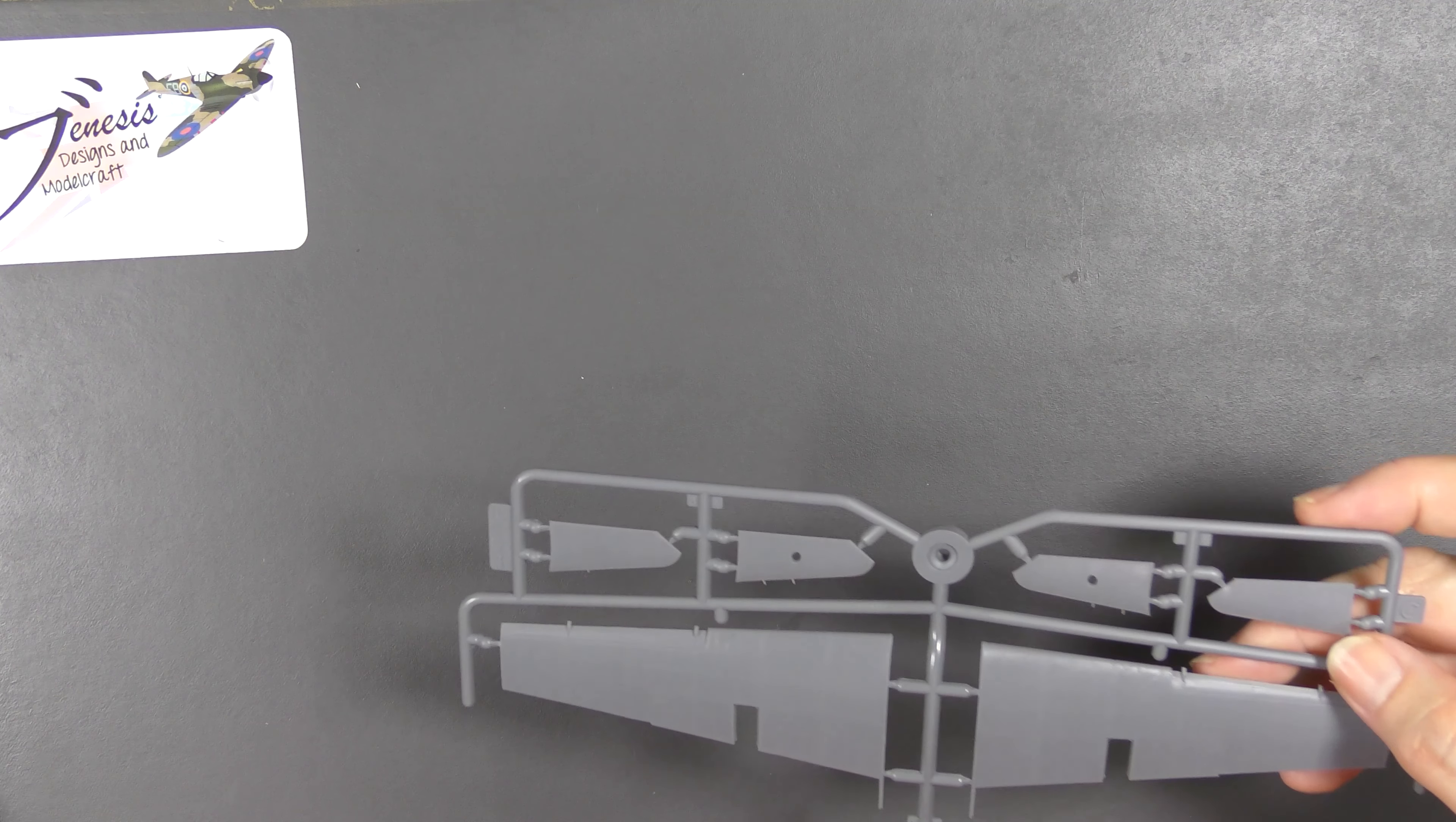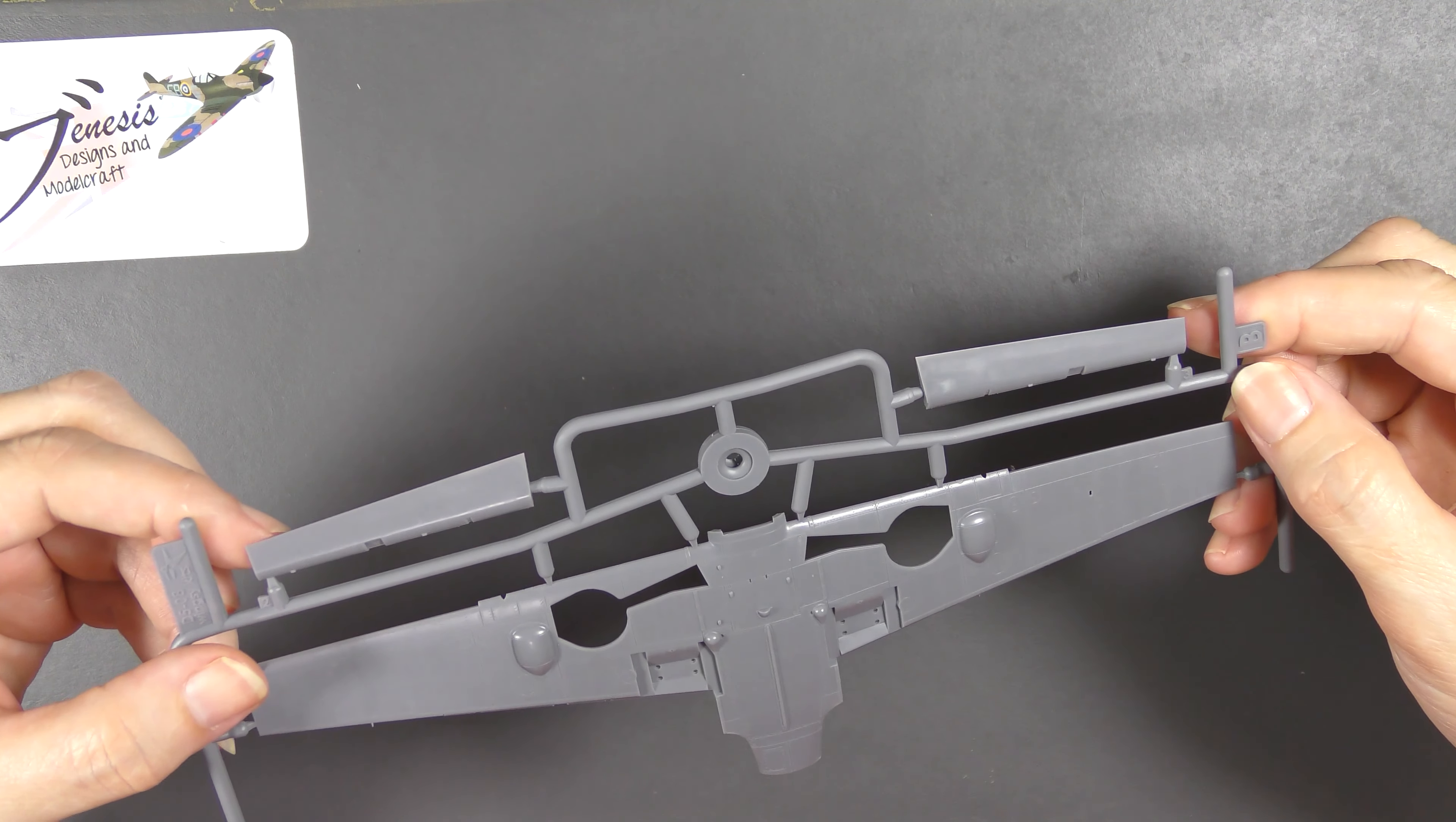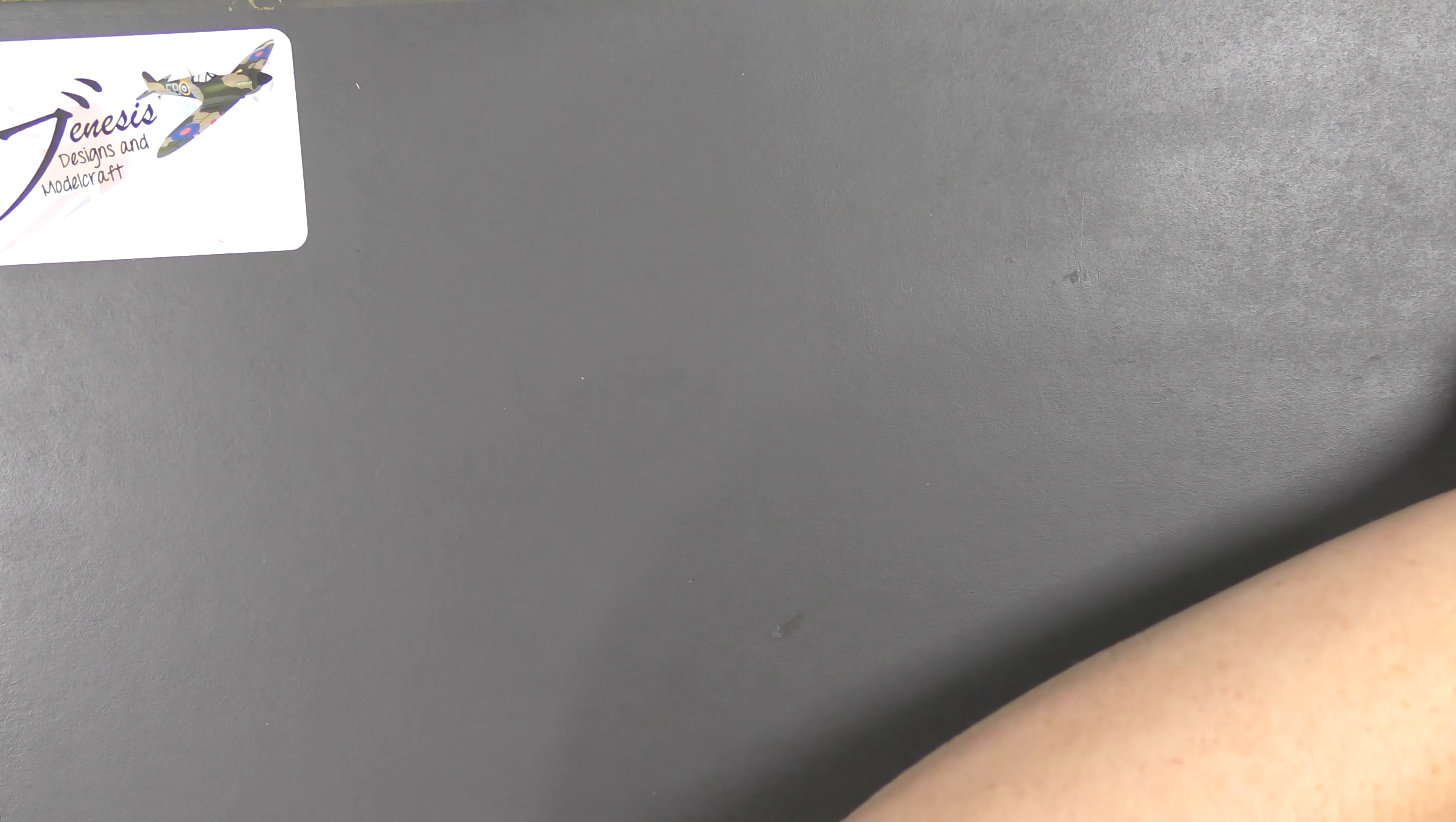That's the upper wing halves, little insert there presumably for a cannon bulge or something similar. Lower half, full span, molded in dihedral, radiator baths with flapper-on things here separate, and again just gorgeous surface detail. It's all recessed and very, very nicely done.